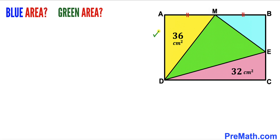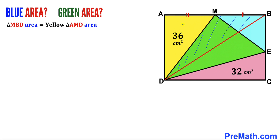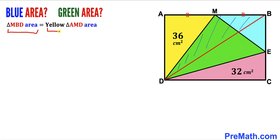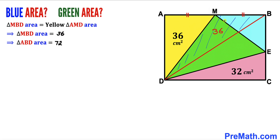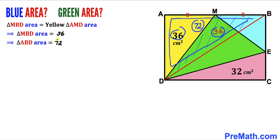Now let's return to our given problem. In the first step, I have connected points B and D — so BD is our diagonal. Focusing on the yellow triangle and triangle MBD, both triangles have the same base and the same height, so the area of triangle MBD equals the area of the yellow triangle: 36 centimeters square. Therefore the area of triangle ABD is 36 plus 36, giving us 72 centimeters square.